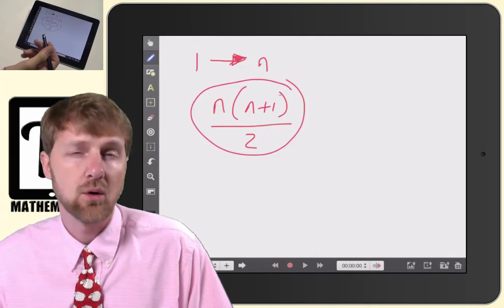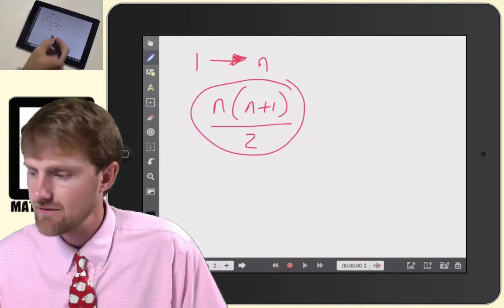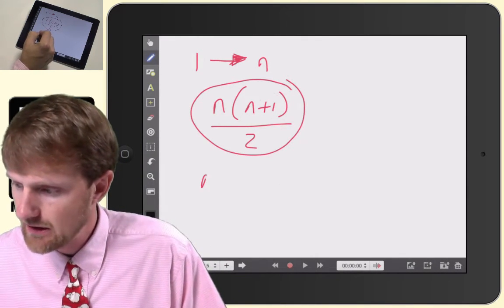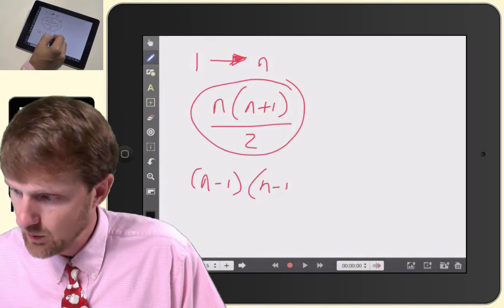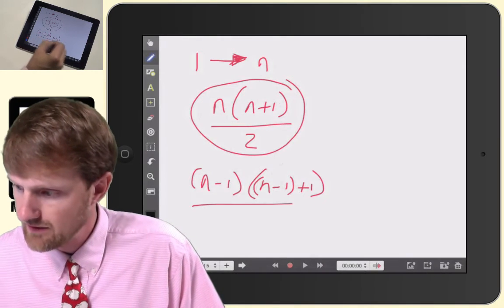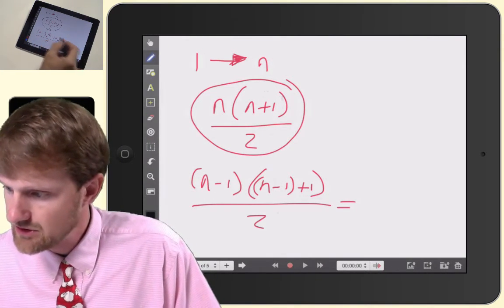Well, we're doing the sum of n plus one or n minus one consecutive numbers. So you would plug that in, n minus one times n minus one plus one divided by two,